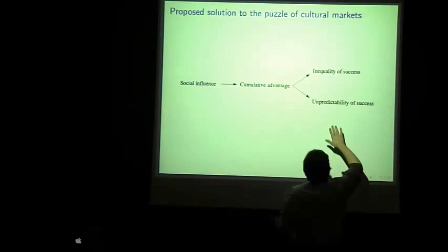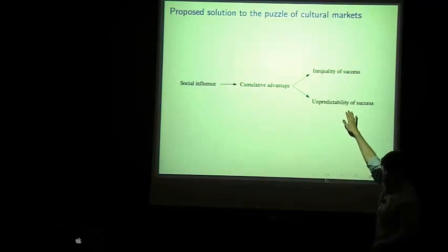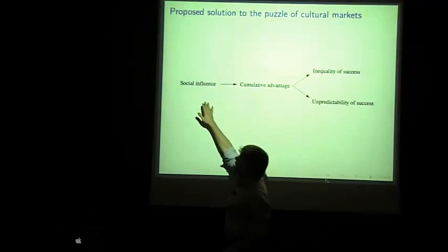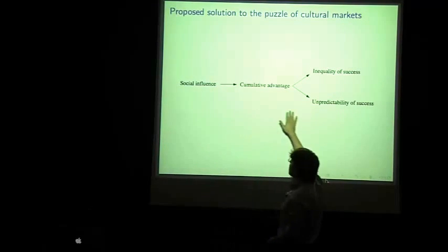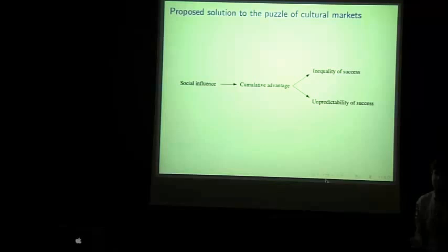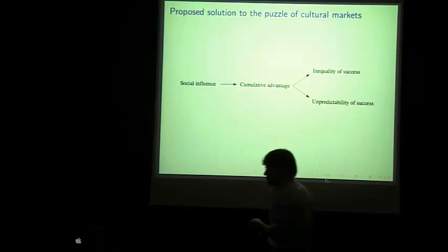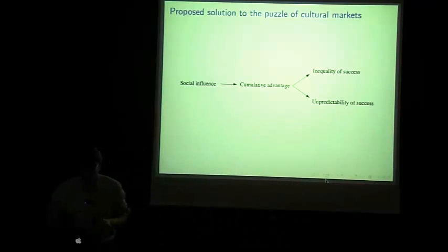And then the argument that I want to make here is that social influence, the process whereby people are influenced by what other people are doing, leads to a process of cumulative advantage, which leads to both the inequality of success and the unpredictability of success. So, these two things that seem to be somewhat contradictory can both arise out of the same individual level process. And this argument is also very much at the core of what sociologists try to do - we see patterns in society, collective level patterns, and then try to understand how individual behavior can lead to those collective patterns.